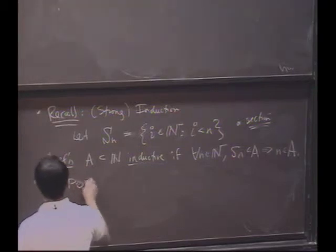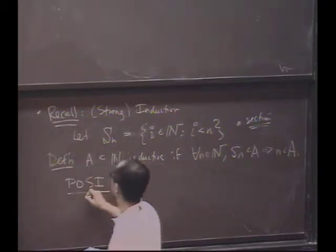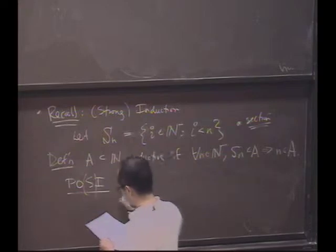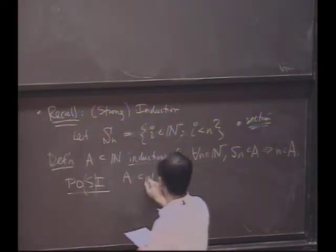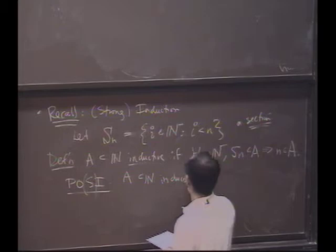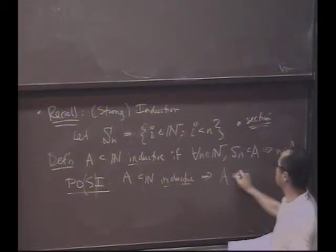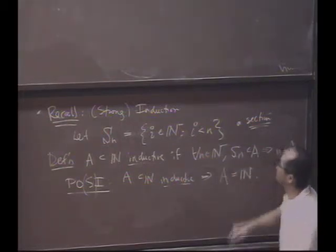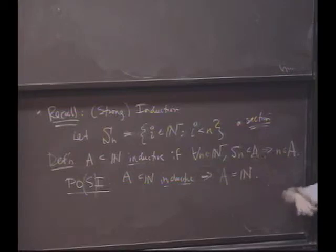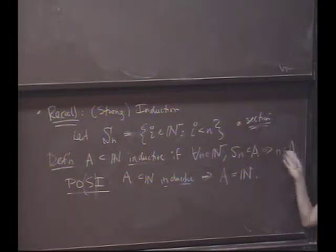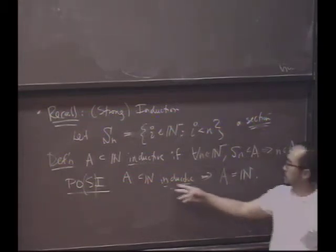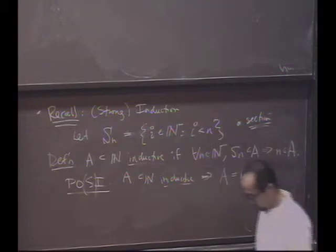And the principle of induction or strong induction basically says if you have an inductive set in the natural numbers, what can we conclude about A? It must be all the natural numbers. So just take the set, for instance, of all indices for which your family of statements holds. Really, induction amounts to showing this, that the set is inductive. And the principle of induction says if it's inductive, it must be the entire set of indices.